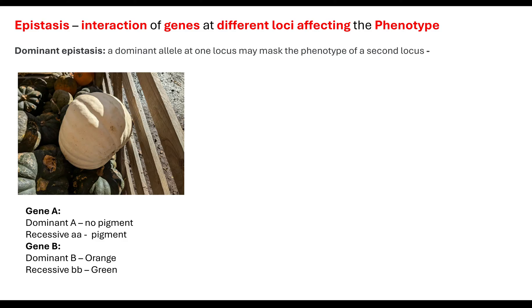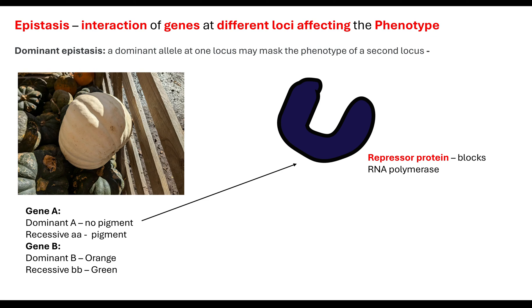So how is it that a gene is going to interact with a different gene? Gene A — the one that results in no pigment — could potentially result in the production of a repressor protein. If there is the dominant allele present, the repressor protein is going to be produced, and that is going to block RNA polymerase from binding at the promoter region for Gene B. So this is one way in which epistasis could be occurring.